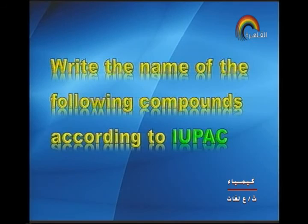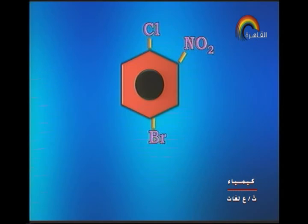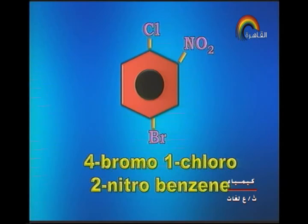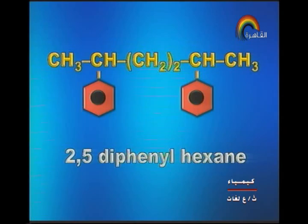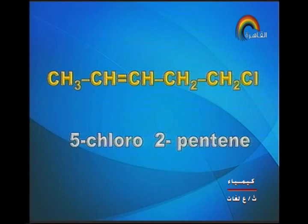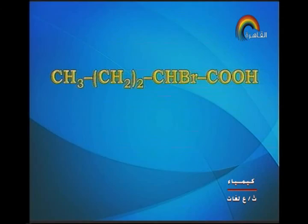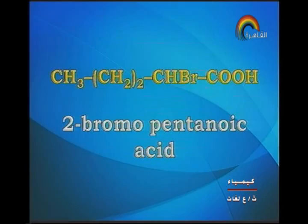Next type of question: write the IUPAC name for the following compounds. As shown on screen: 4-bromo-1-chloro-2-nitrobenzene. Next: 2-methyl-2-propanol. Next: 2,5-diphenylhexane. Next: 5-chloro-2-pentene. And this compound is named as an acid: 2-bromopentanoic acid.